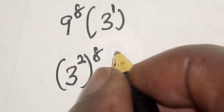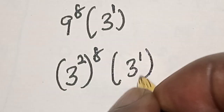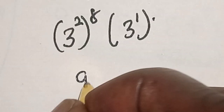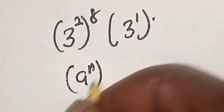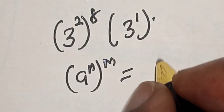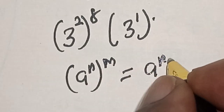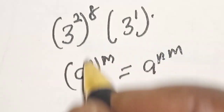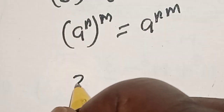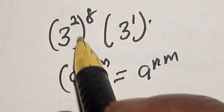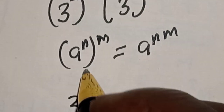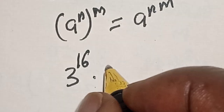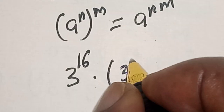Remember this rule: if you have a raised to power n, raised to power m, it equals a raised to power n times m. Applying this, 3 squared raised to power 8 becomes 3 raised to power 8 times 2, that is 3 raised to power 16, then multiplied by 3 raised to power 1.